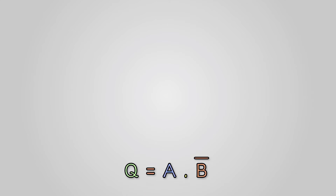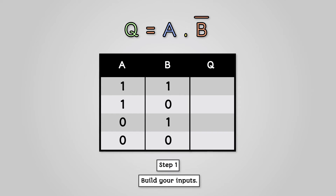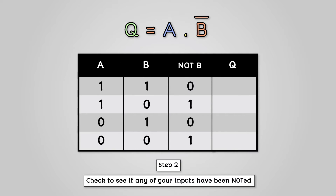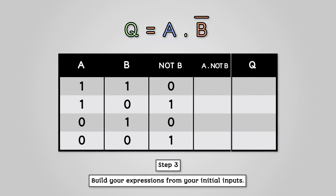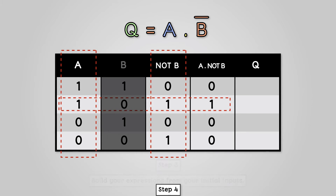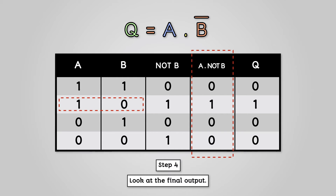Let's look at a simple boolean expression: Q equals A AND NOT B. We'll solve this step by step. Step 1: Build your inputs — we have 2 inputs, A and B, so we need 4 rows. Step 2: Check to see if any of your inputs have been NOTted. Yes, B has been NOTted, so we add a column for NOT B. Notice how all we have done is flip the B column values. Step 3: Build your expressions — now we need to add the expression by comparing the A column and the NOT B column. As it is an AND gate, the output will be 1 if both inputs are 1. Step 4: Look at the final output. Our expression is Q equals A AND NOT B, so the values in column 4 is our answer. There is only one possible input to this circuit that gives a TRUE output: when A equals 1 and B equals 0.